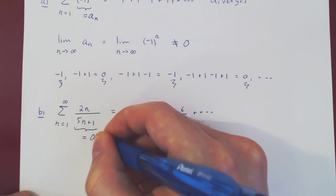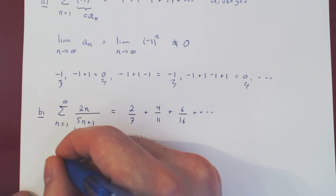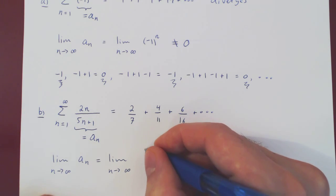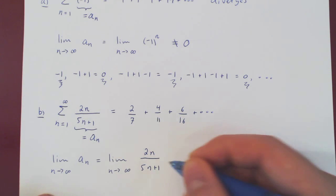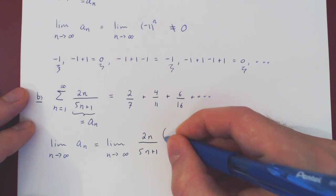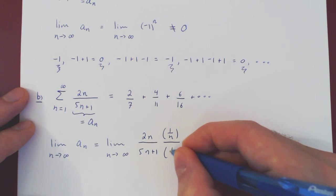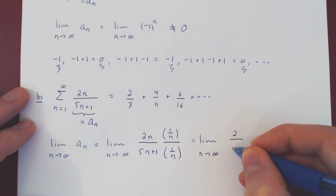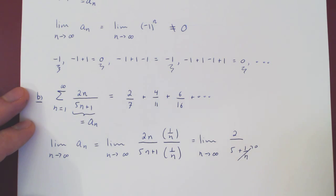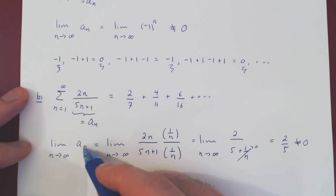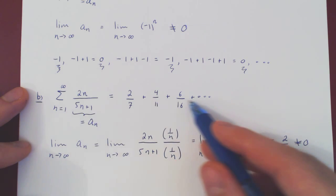We look at the limit as n goes to infinity of aₙ, where aₙ is 2n over 5n plus 1. We have an infinity over infinity case, but this is easily handled if we multiply top and bottom by 1 over n. We get 2 over 5 plus 1 over n. Since 1 over n shrinks to 0 as n goes to infinity, we're left with 2 over 5. This is not equal to 0, so by the divergence theorem, the series diverges.